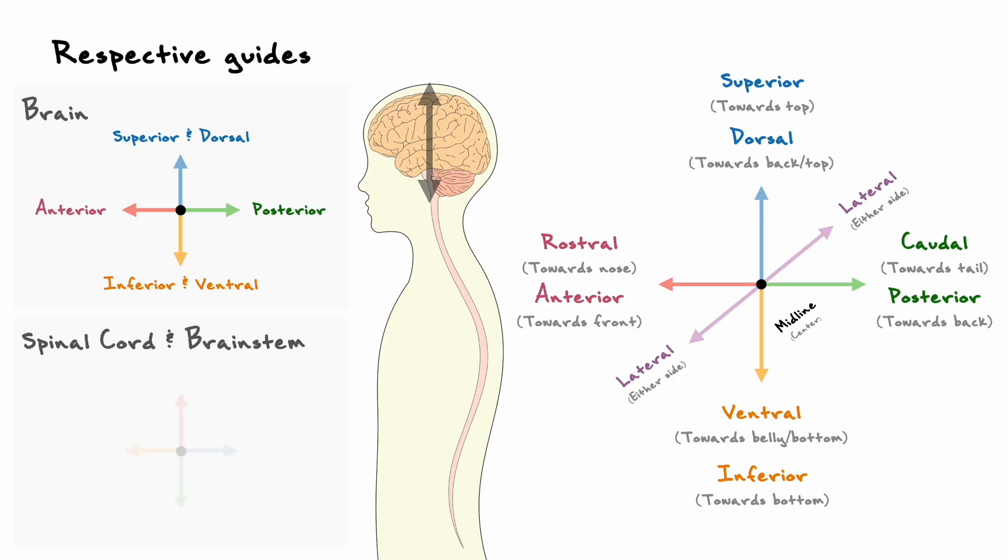When it comes to the spinal cord, you will see shortly that the terms do not all match with our shorthand guide on the right. From what we established, up is dorsal, back is caudal, down is ventral, and forward is rostral. In addition to that, some structures in the spinal cord use the anterior and posterior terminology, which from their definitions of being towards the front and back as we can see here, it matches up with the dorsal and ventral axis.